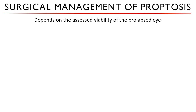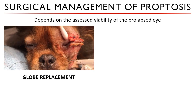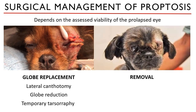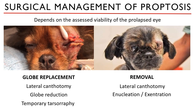The choice of surgical management for patients suffering from proptosis depends on the assessed viability of the prolapsed eye. In cases where there are indications of a functional eye, the globe can be replaced — this entails three surgeries: lateral canthotomy, globe reduction or replacement, and temporary tarsorrhaphy. However, if the eye has suffered extensive damage and there is no function after physical and neurologic examination, the eye is removed through enucleation or exenteration. These procedures will be discussed in detail in the next videos.